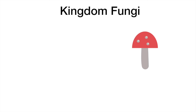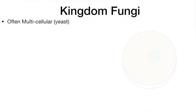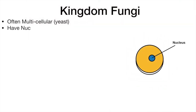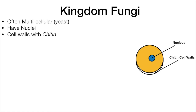Fungi are often multicellular and all contain nuclei. They have cell walls made out of chitin and don't have chlorophyll. Like animals, they feed by parasitic or saprophytic nutrition.